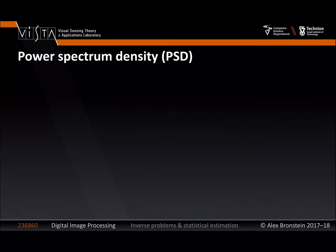Let's see what happens when a stochastic process undergoes a linear translation-equivariant (LSI) system. These systems are diagonalized by the Fourier transform, so it is convenient to work in the diagonal representation where the system acts as an element-wise product in the Fourier domain. For wide-sense stationary signals, the shift-invariant autocorrelation functions will also be diagonalized by the Fourier transform, giving us the power spectrum density — the spectrum of the signal.